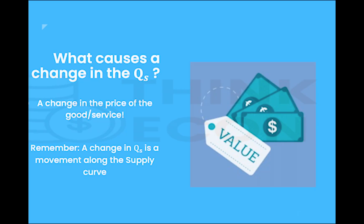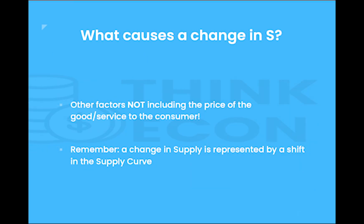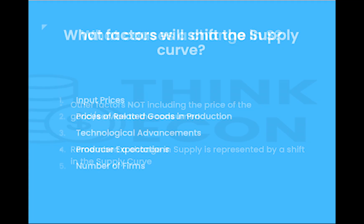So if a change in price of the good changes quantity supplied causing a movement along the supply curve, then what constitutes a change in supply, or a shift in the entire supply curve itself? Well, that would simply be all the factors not including the price of the good or service. We've summarized all of the supply curve shift factors into a list of five: input prices, prices of related goods in production, technological advancements, producer expectations, and the number of firms in the market. Now let's explain what each of these shift factors mean and provide a few examples.